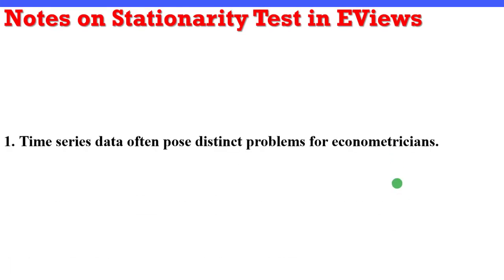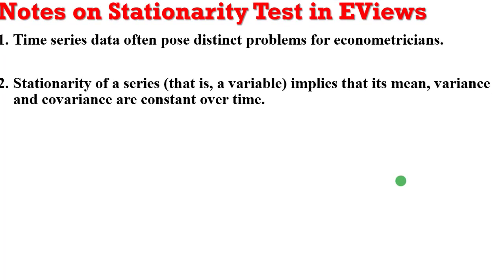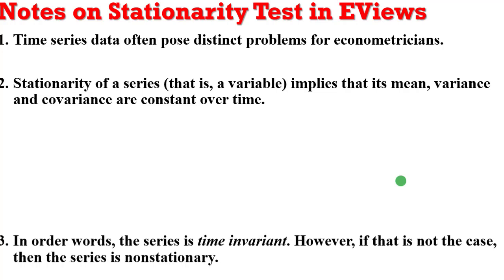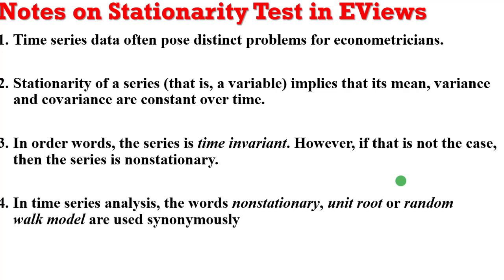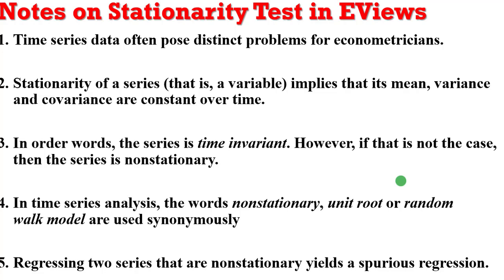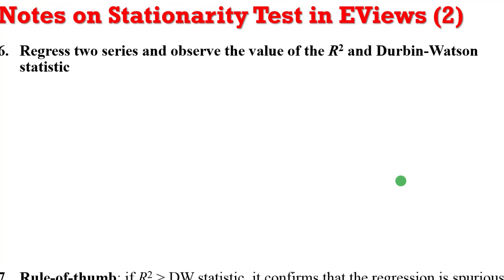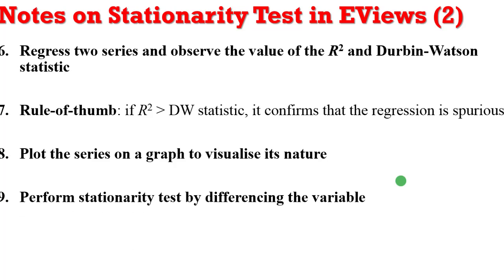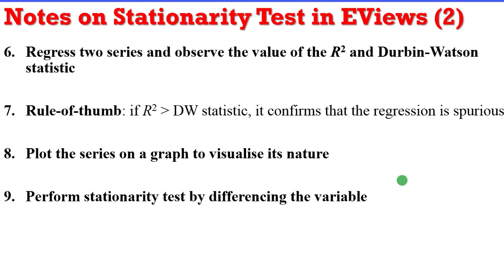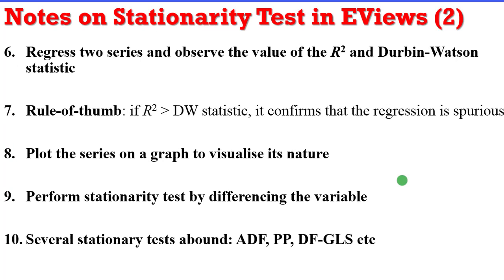Having said all that, it's important to review key concepts for stationarity testing in EViews. If you're using time series data, testing for stationarity is essential. A stationary series has a constant mean, constant variance, and constant covariance — it is time invariant. If that is not the case, the series is non-stationary. In time series analysis, the terms non-stationary, unit root, and random walk are all synonyms. When you regress two non-stationary series together, you get a spurious regression — confirmed when R-squared exceeds the Durbin-Watson statistic. You can plot the series to visualize the trend, then perform stationarity testing by differencing. Several tests are available: the augmented Dickey-Fuller, Phillips-Perron, DF-GLS, and others.